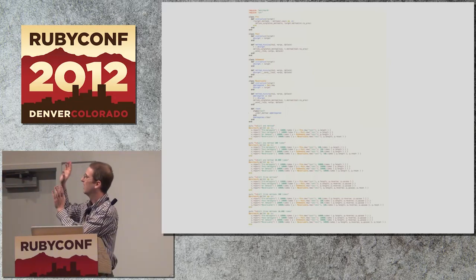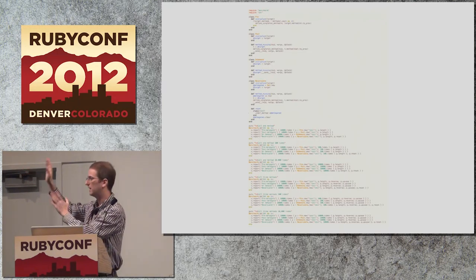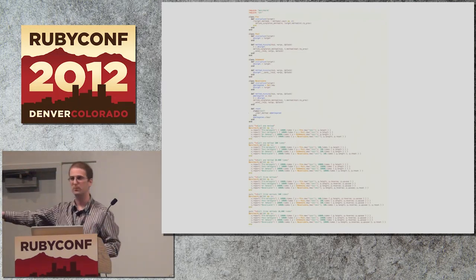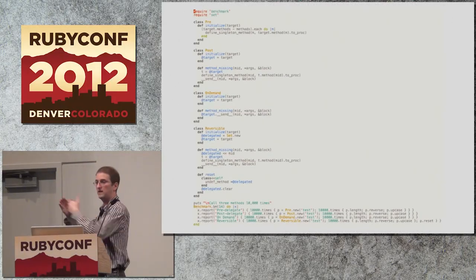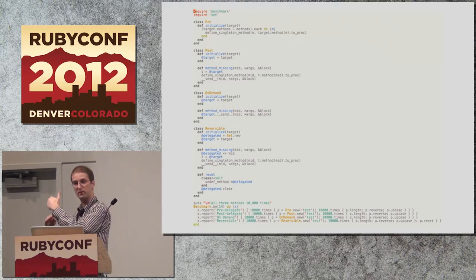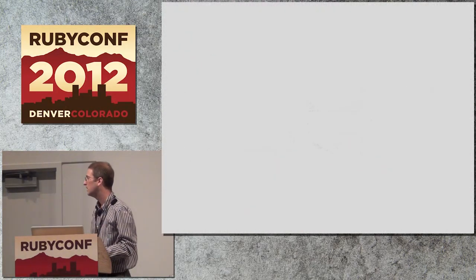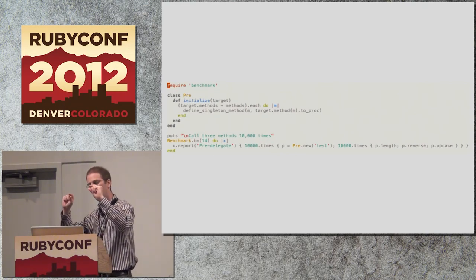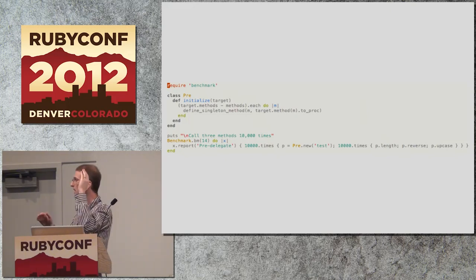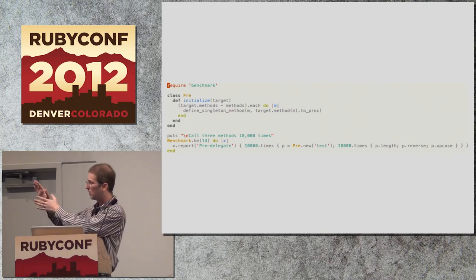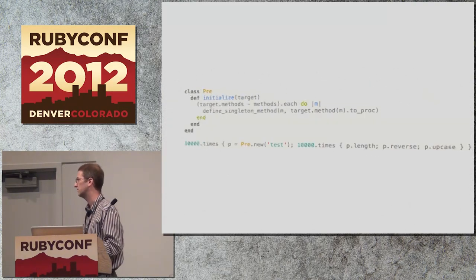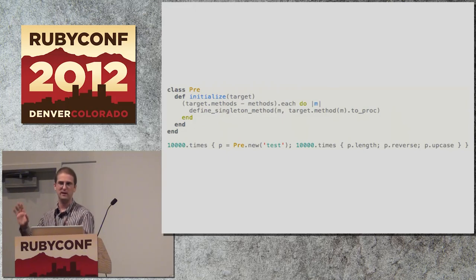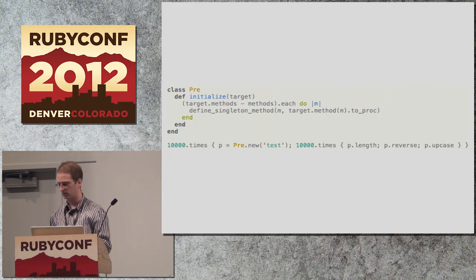The first thing I did was take out all the benchmark runs before the last one, since it was only that last one causing the crash. I said, 'Will that last benchmark run on its own still trigger the crash?' And, yep, it did. Then I eliminated all the other delegation strategies and just went with the pre-delegation one. And, yep, that still crashed. At that point, I didn't need the benchmark library anymore — I could just hoist the code out and run the method that was actually being benchmarked on its own. And, yep, it still crashed.